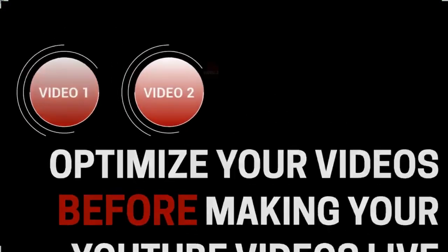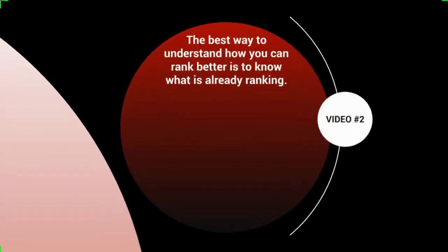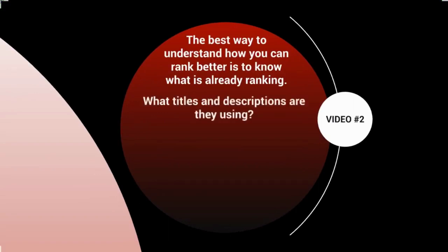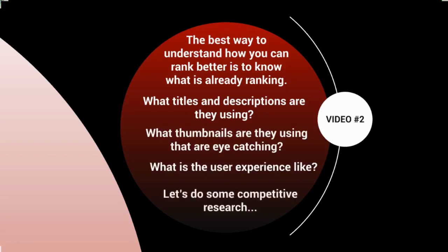Welcome to video number two — competitive research. The best way to understand how to rank better is to know what is already ranking in your niche. We want to analyze the top-ranking videos: what titles and descriptions they use, what eye-catching thumbnails they use, and what the user experience is like when you click through.